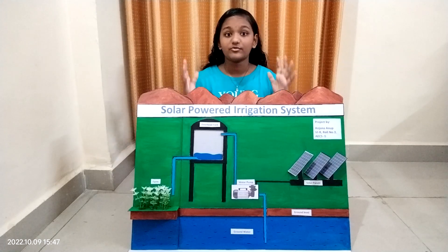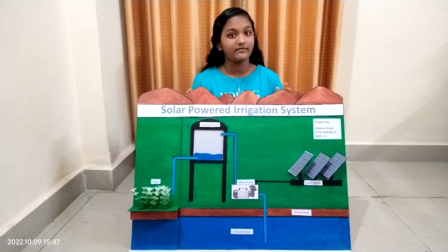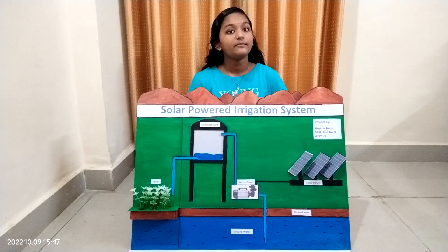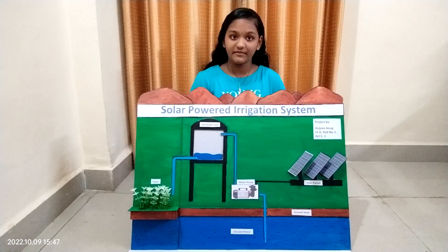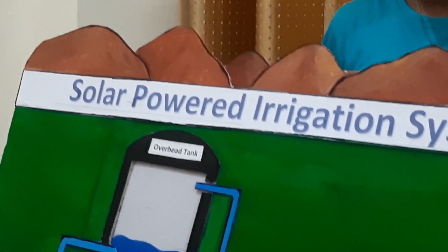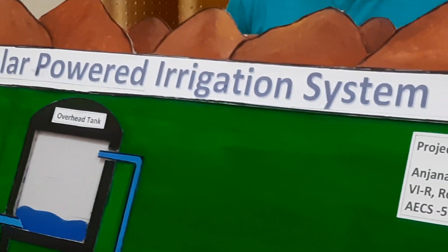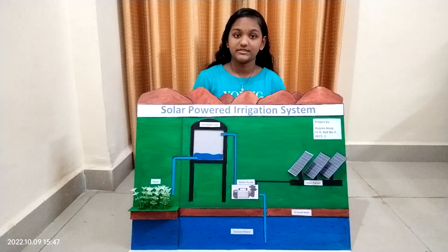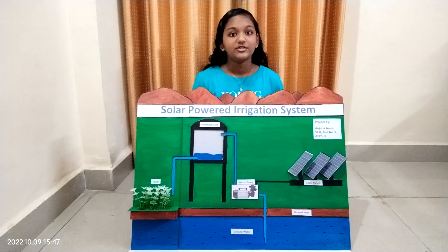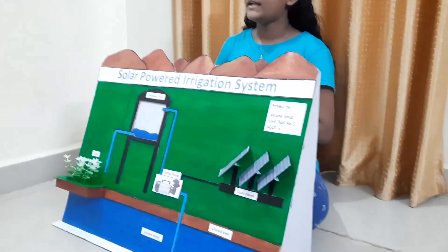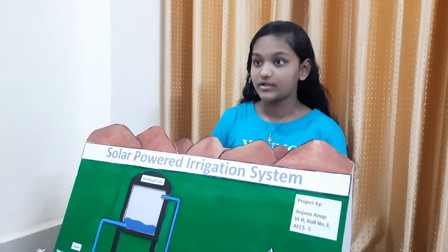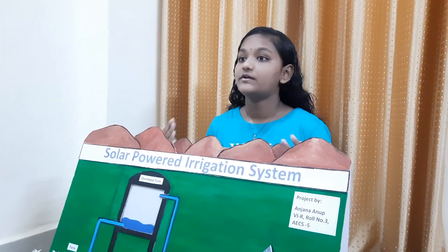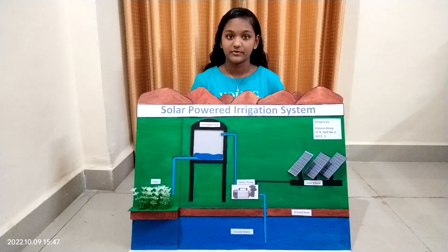There is a large amount of uncultivable land in our country because in many places we don't have water available, and when we have water we don't have a proper resource of electricity to pump it out. Through this model, let's see how we can utilize groundwater to irrigate the crops by using a renewable source of energy, which is solar energy.